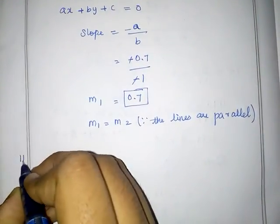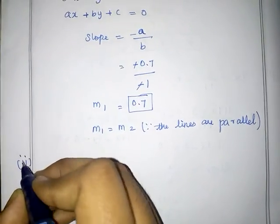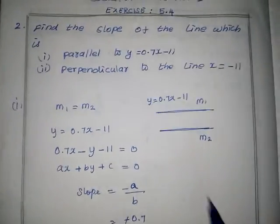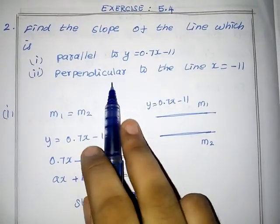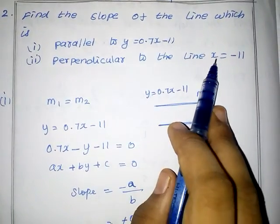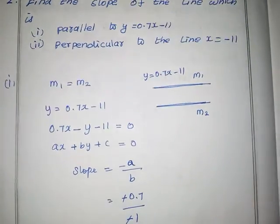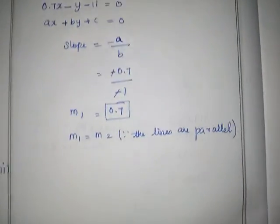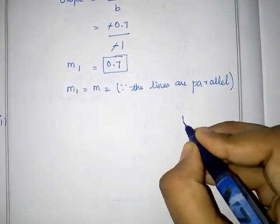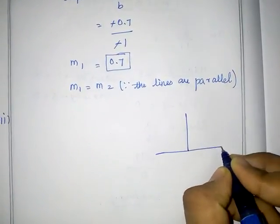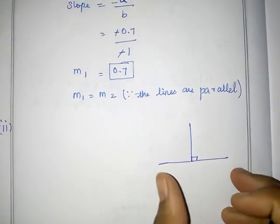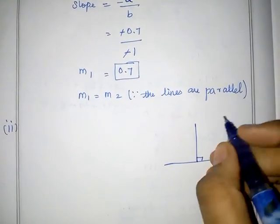Now for the second subdivision. We need to find the slope of the line perpendicular to the line x = −11. For perpendicular lines, M1 multiplied by M2 is equal to minus 1.